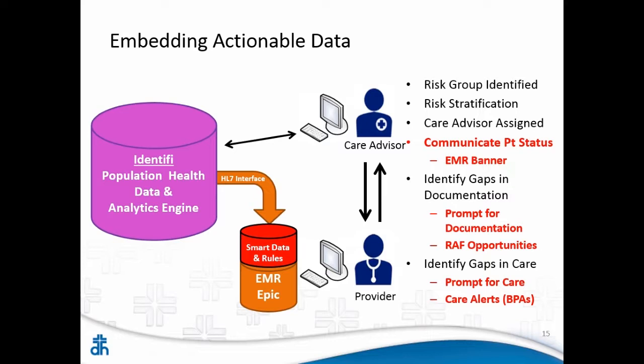From that outfeed we created a couple of things. First: if Steve goes into the emergency room, how do we let the ED know that he is a high-risk patient who has a lot going on and has a care advisor? When you log into Epic and look at a patient's chart, there's a place for a banner. Out of this outfeed, if Steve's that person, a banner will show up saying: 'Steve is this person, and this is the care advisor and how to contact them.' So when somebody logs into Epic, it's really clear and communicated to everybody.